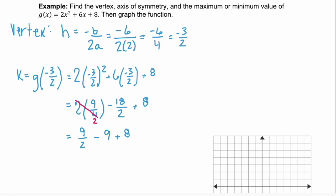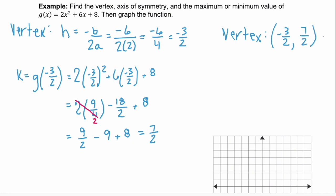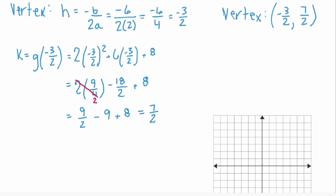Adding all of those values together we get 7/2. The vertex is an ordered pair, so our vertex has an x value of -3/2 and a y value of 7/2. We can graph that right away: -3/2 is -1.5 and 7/2 is 3.5, so our vertex is this point.